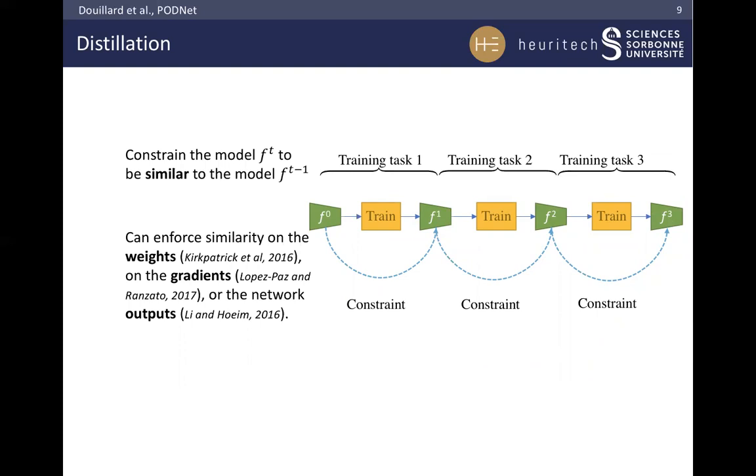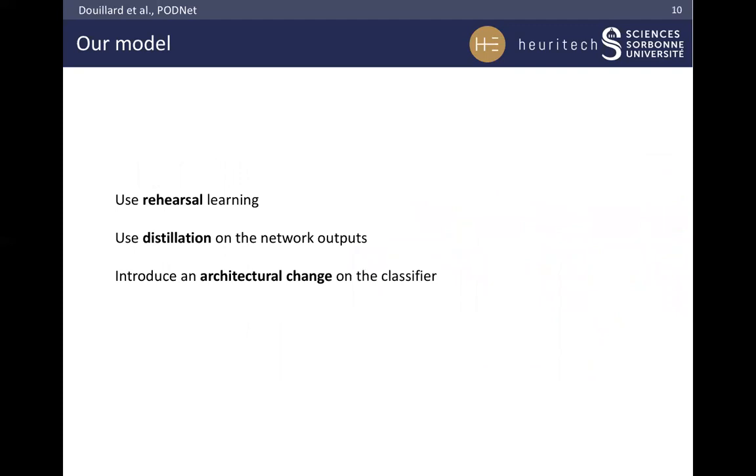This distillation, this constraint, can be defined in many ways, and can be applied to weights, gradients, or even network outputs. In our case, we reuse a bit of the previous class's data in our rehearsal learning scheme. We also distill the knowledge of the previous network with the current network by constraining our network outputs. Finally, we also propose an architectural change to the classifier.